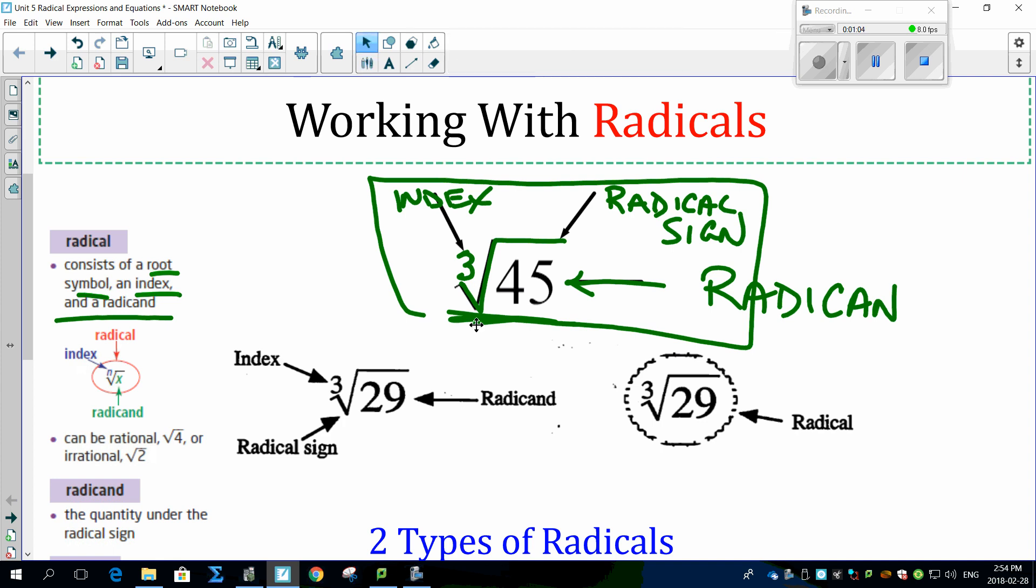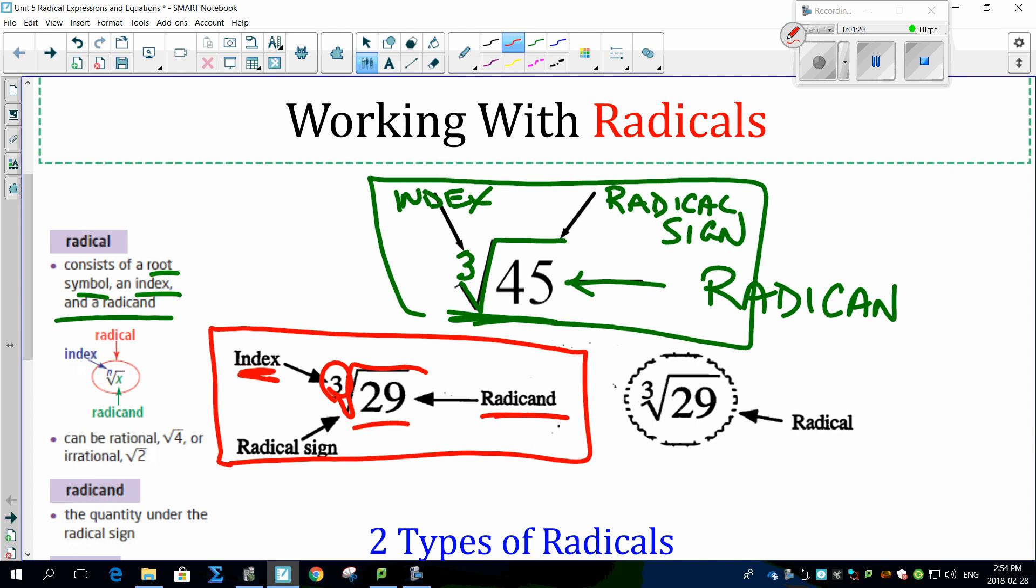I've got it written down here. Here's the index - most of the time you'll be dealing with square roots and cube roots. Here's the radical sign, right here. Here's the radicand - in this case it's 29. This whole thing together is called a radical.